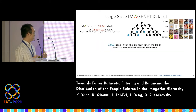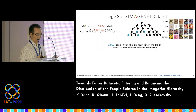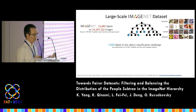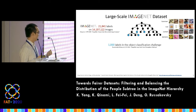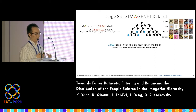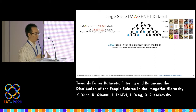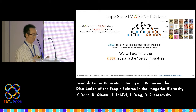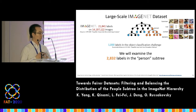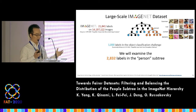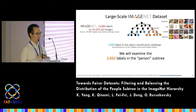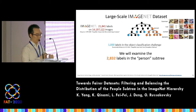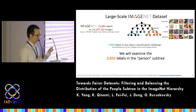When people talk about ImageNet, frequently they refer only to the ImageNet challenge, which is the subset of 1,000 labels that became the benchmark for object recognition. However, we take a look at the larger full ImageNet and focus specifically on the set of people labels in the present sub-tree.